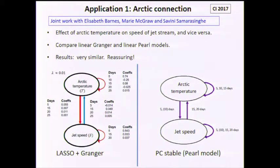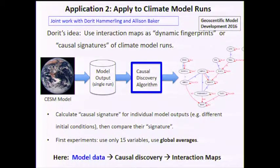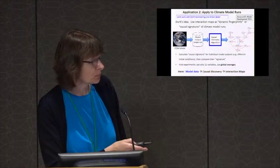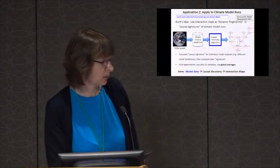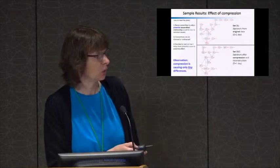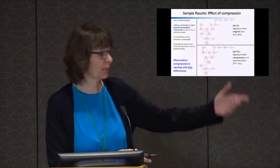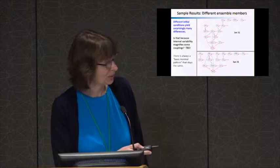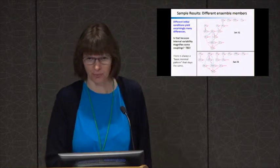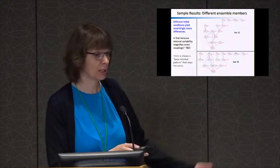Another example: we're taking the output from a climate model and doing some reverse engineering — taking global averages and trying to find the causal signature in the data between different variables. For example, we compare the causal signature before and after data compression; it changes very little, which is great. But if I look at different ensemble members, interestingly I get a core structure that's the same but some connections are different, which makes us think that maybe some initial conditions bring out some dynamic relationships more strongly than others — something we're still investigating.